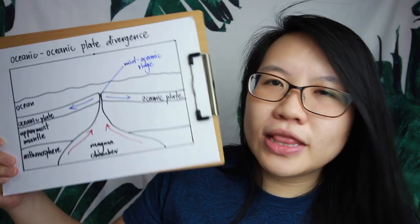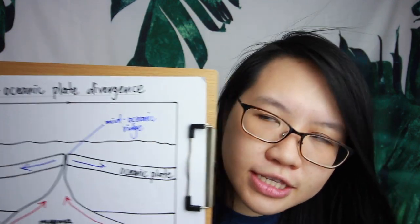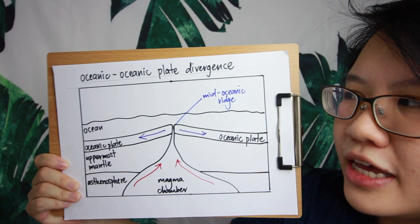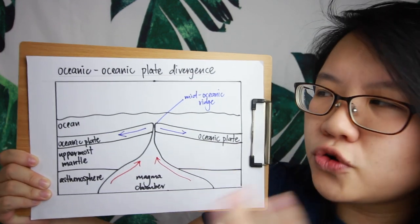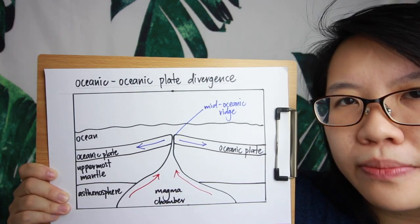Now let's move on to divergent plate boundaries. There are two different possibilities: OO divergence and CC divergence. OO refers to oceanic-oceanic plate divergence, and CC refers to continental-continental plate divergence.